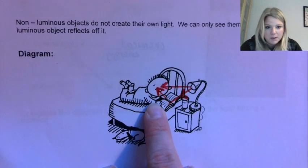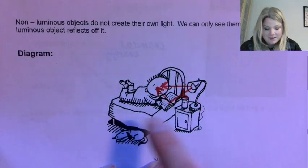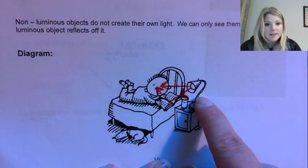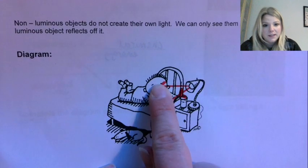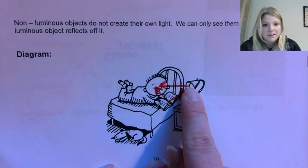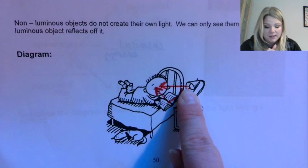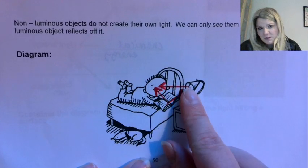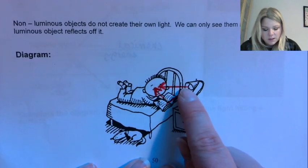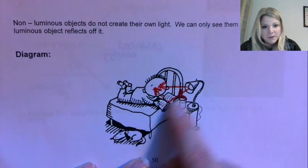So this wee guy reading his book here, the only thing producing its own light in this here is this light bulb. So light always travels in straight lines and anytime we're drawing light we draw it as an arrow just to show the direction that the light is traveling in. So there's going to be light that's going to travel in straight lines to his eyes, that's how he sees the light. Now it's also going everywhere in the room.